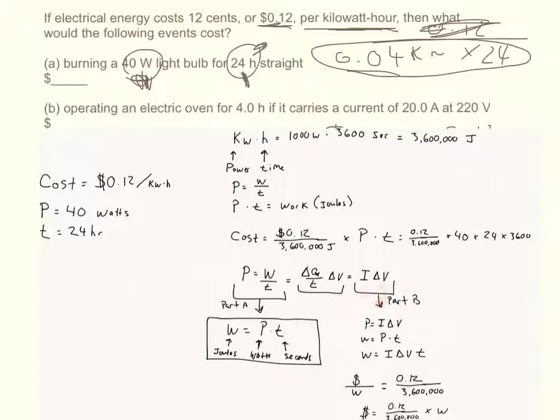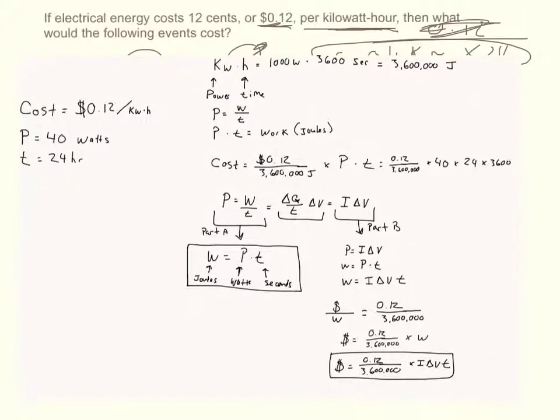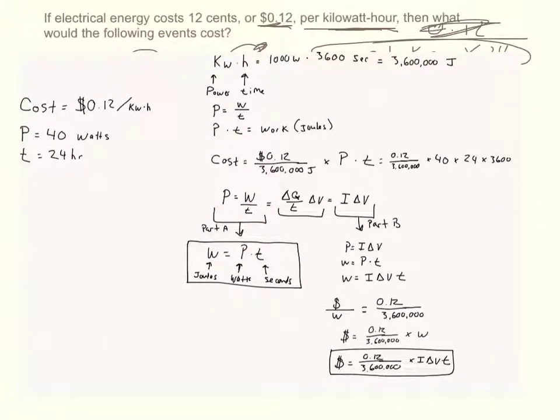Well, in this problem, we just need two equations for power. One that has to contain work, and the other one has to contain the units that we're given, which is current and potential. So this one contains work, this one contains current and potential. When we solve for work from this equation, we get work equals power times time. And so then we can substitute power for this equation. So work equals power times time. And we substitute power for IV. So I times delta V times T is equal to work. We have all of those units already. So the cost per unit of work is equal to 0.12 over 3.6 million.